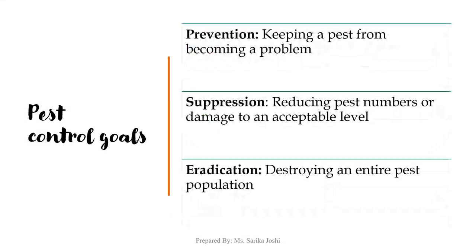The first pest control goal is prevention — keeping a pest from becoming a problem. This may be a goal when the pest's presence or abundance can be predicted in advance. Continuous pests by definition are usually very predictable. If you know there are circumstances and conditions favoring their presence, you may prevent such situations.